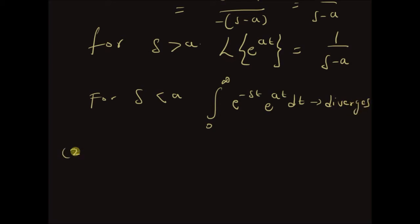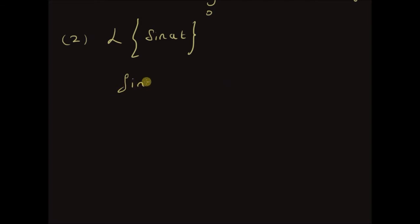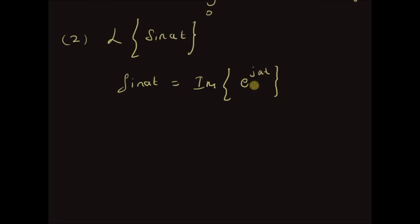Now let us look at the Laplace transform of sine of at. We know that sine of at is equal to the imaginary component of e to the power jat, by Euler's formula. We can find the Laplace transform of sine of at by first computing the integral from 0 to infinity of e to the power minus st times e to the power jat dt.